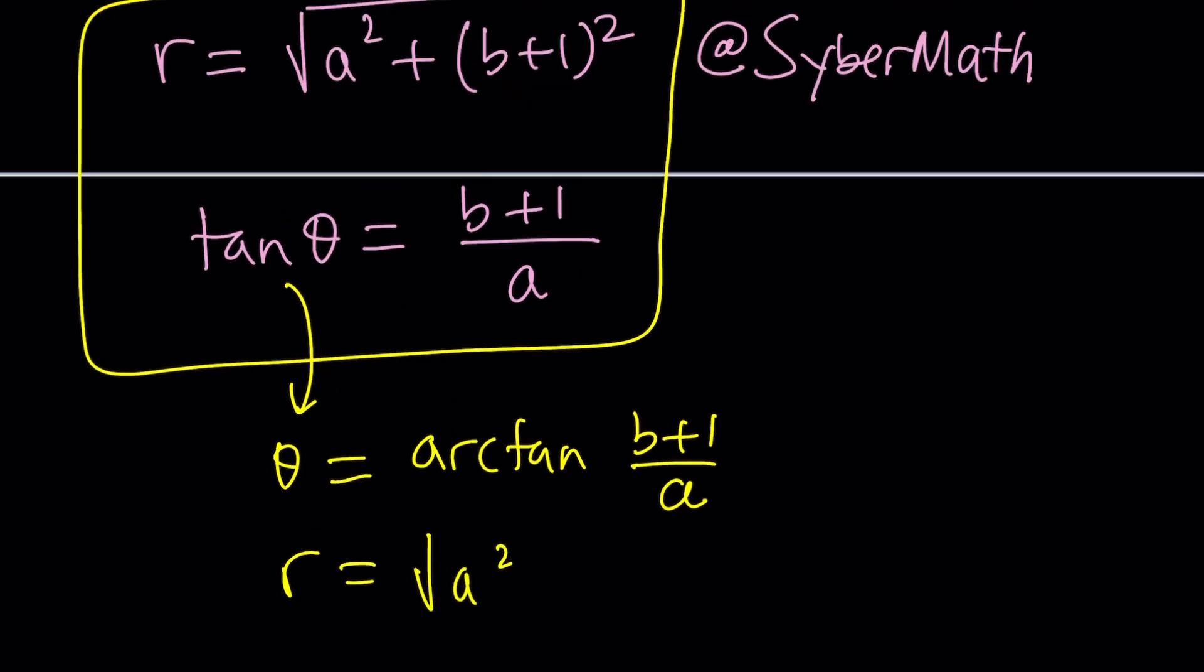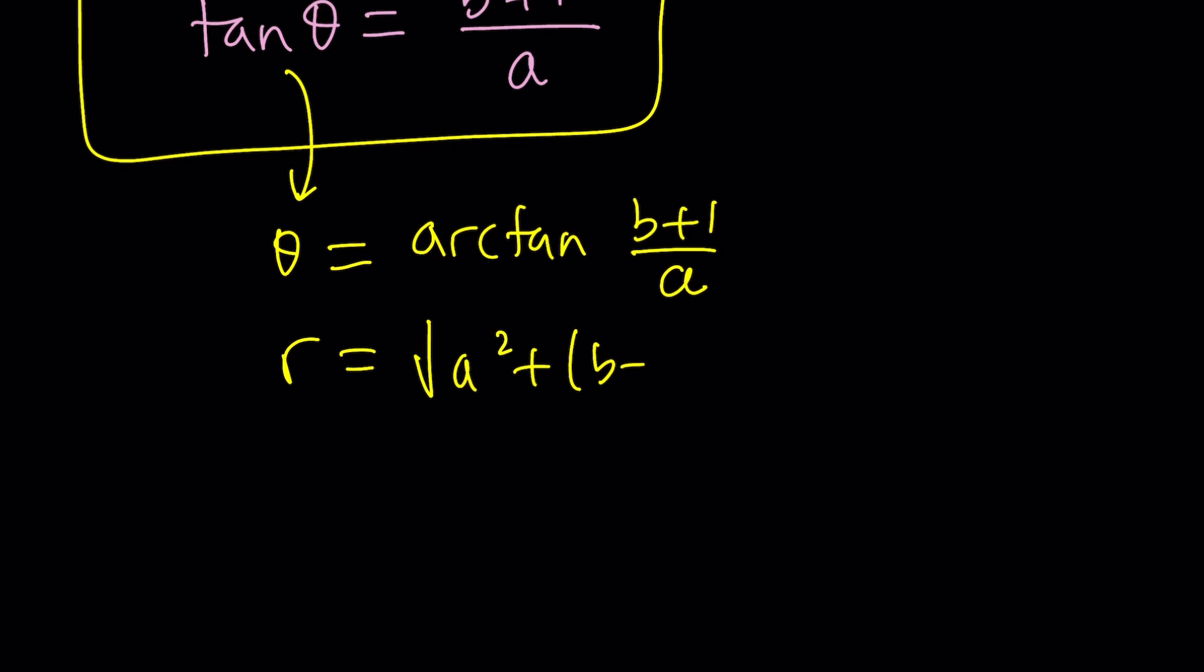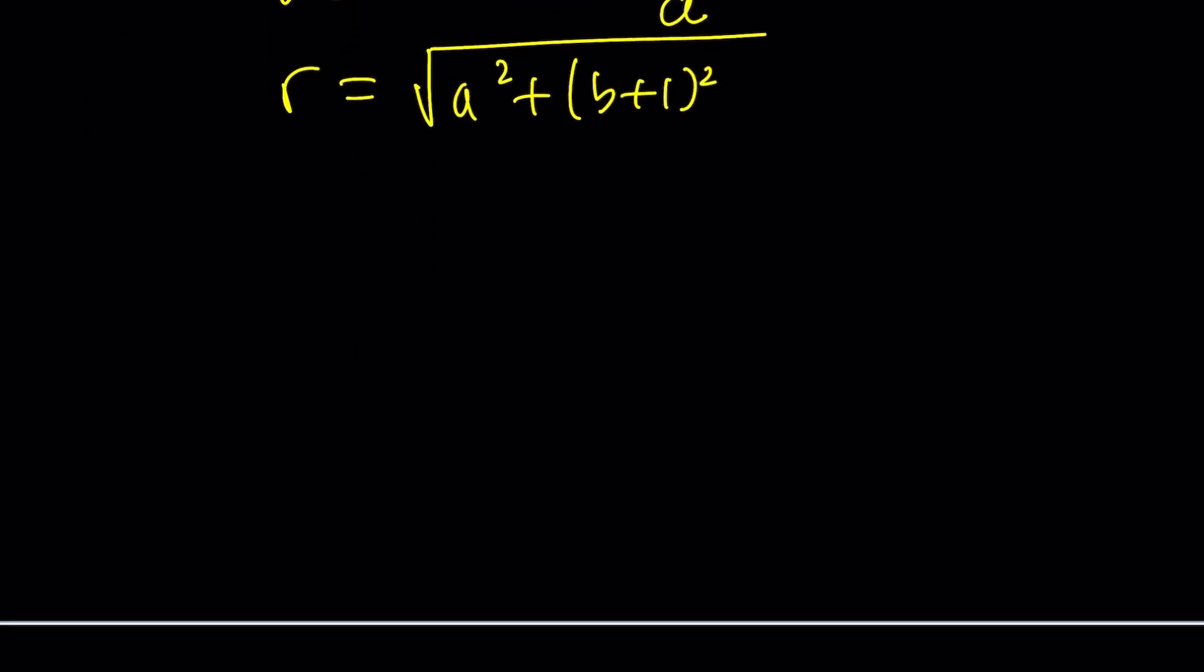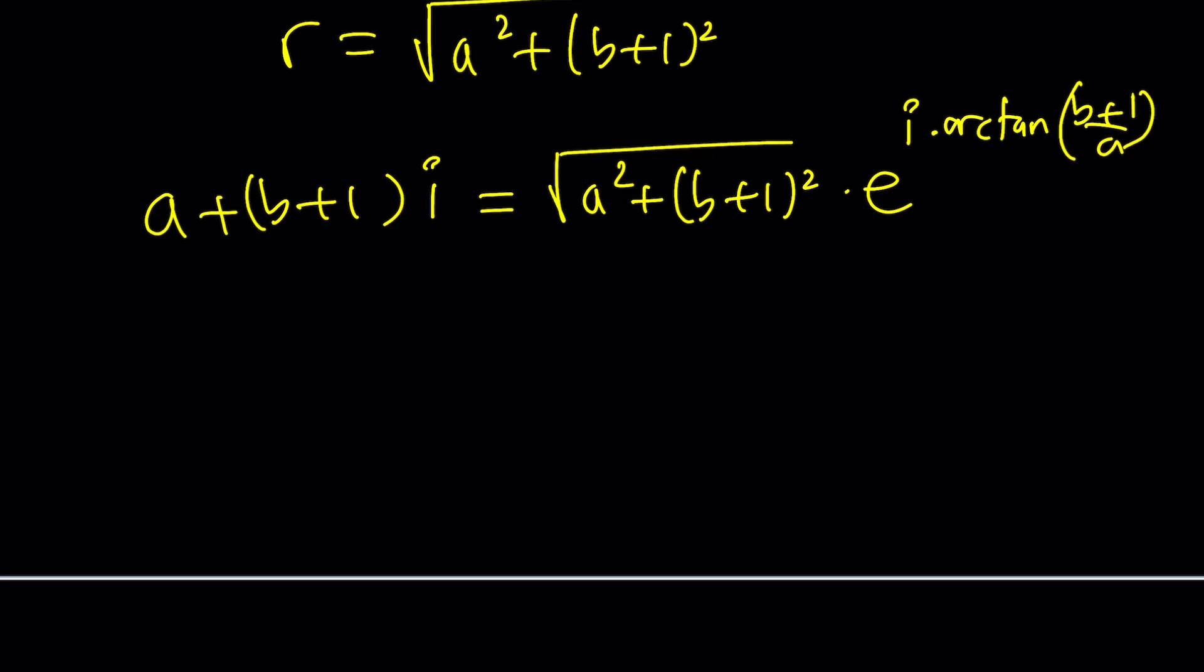So why don't you make halwa, right? Some of you may not know what it means, but look it up. So here's what we have. This complex number is equal to r, which is this, times e to the i theta. And theta is arctan b plus 1 over a. How complicated this is. This is what makes it fun, in my opinion. This is crazy, isn't it? But don't worry.